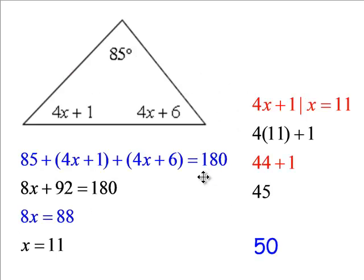Now we've got some more algebra in there. All three of these expressions have to add to 180. Why? Because the sum of the interior angles of a triangle sum to 180. So, there's your 85, there's your 4x plus 1, there's your 4x plus 6, and here I am combining like terms and solving for x and getting 11.